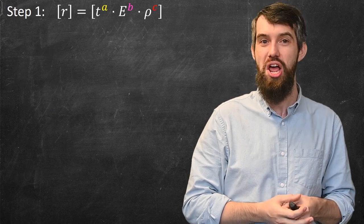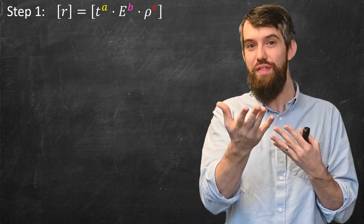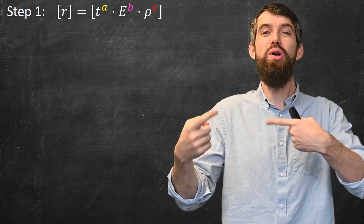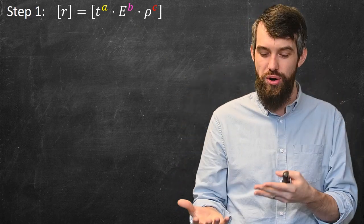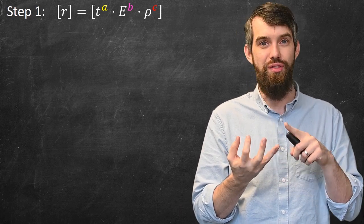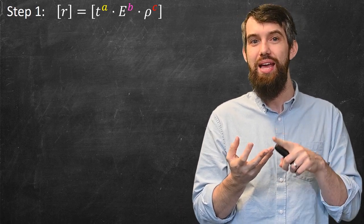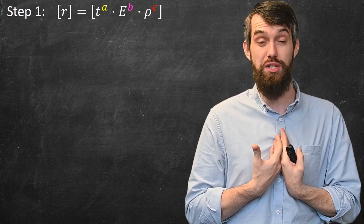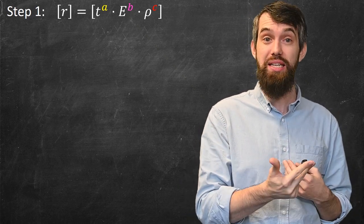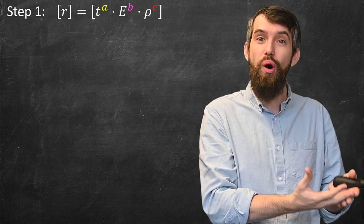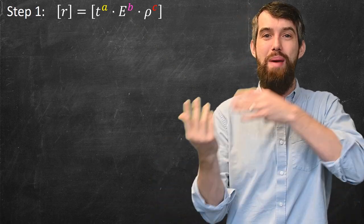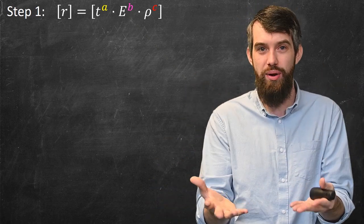Okay, so let's try solving this then. Our first step is to say that the dimension of that radius must be the dimension written as some combination, some product of powers of the time to an A, the energy to a B, and the density to a C. So our goal is to figure out, well, what is the A, B, and C, such that if we write our R as this particular combination, then the dimensions match. Notice I'm not saying the magnitudes match, I'm just talking about the units.